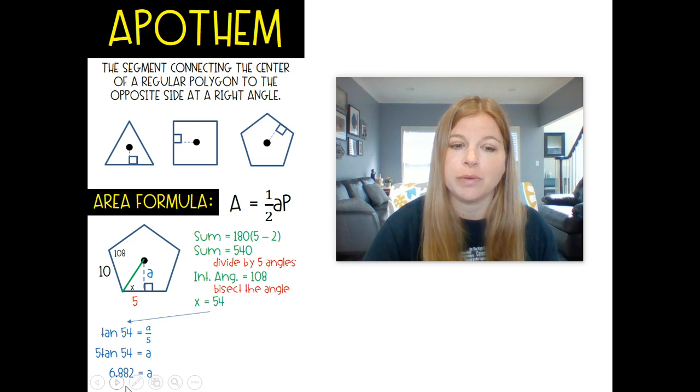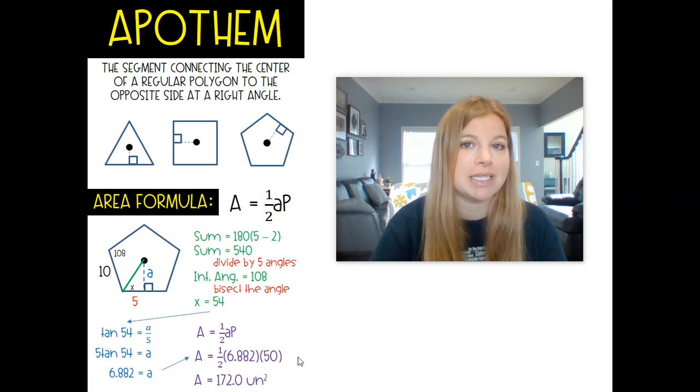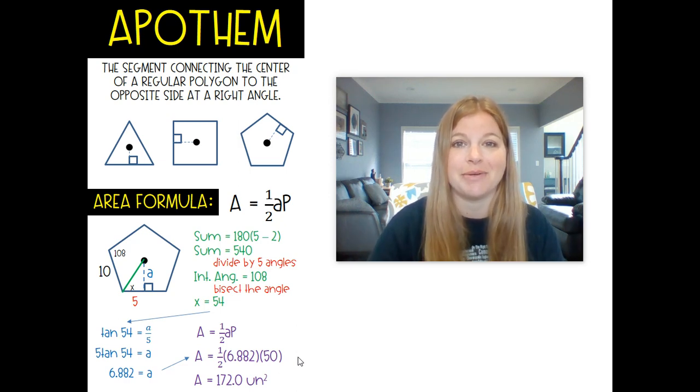So that's the length of this apothem. Now I need to find the area of this pentagon. Now I have my apothem, we already figured out the perimeter was 50. So now it's 1 half times the apothem times 50, plug it into your calculator, and you get 172.0 units squared. A little bit more involved than just a regular area formula that we've done before, but we're going to do this exact same process four more times.